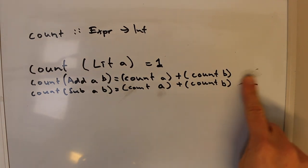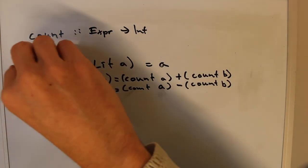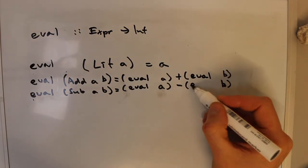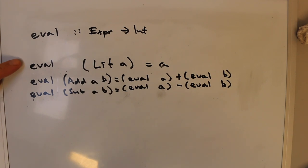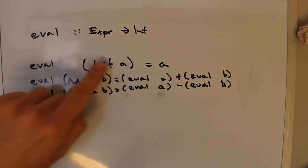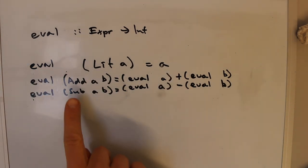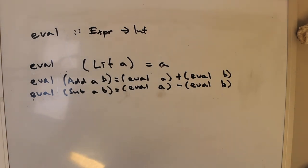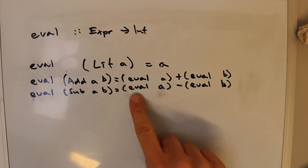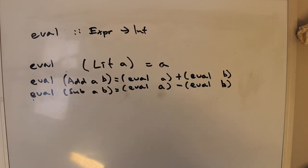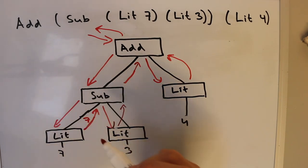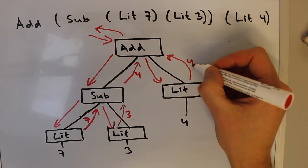The second example of a recursive function is 'eval', which corresponds to the semantics already suggested by the data constructor names. We do a case expression on the constructor: if it's a Lit the answer is its integer value; if it's an Add we add the recursive evaluations of both sub-expressions; if it's a Sub we subtract the recursive evaluation of one from the other. We can construct the call graph for eval by taking the one from count and replacing the return values.